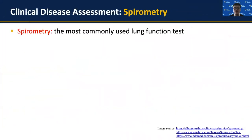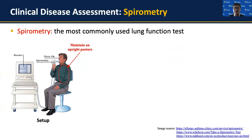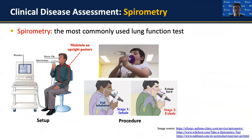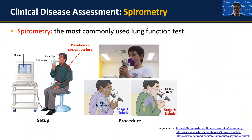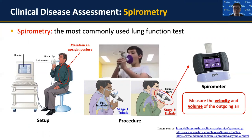The most commonly used lung function test is spirometry. In each spirometry test, the patient stays still and maintains an upright posture to ensure clear lung airway. Then the patient is asked to breathe through a mouthpiece. In the inhaling stage, he should inhale as deeply as possible. Then in the exhaling stage, he should exhale hard to quickly expel as much air as he can from the lung. This protocol needs to be strictly followed to ensure accuracy. The exhaled airflow goes through a specialized device called a spirometer, which measures the velocity and volume of the airflow and quantifies lung function.